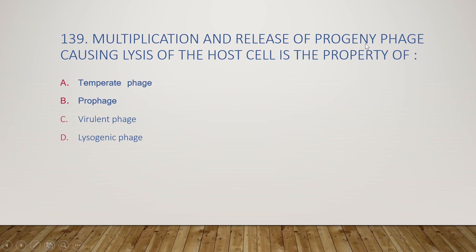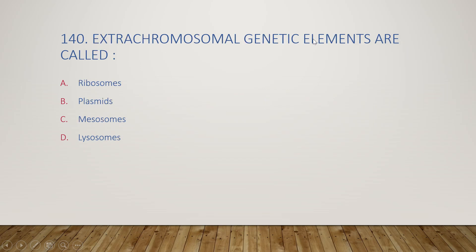The next question: multiplication and release of progeny phage causing lysis of the host cell is the property of temperate phage, prophage, virulent phage, or lysogenic phage? The right answer is option C, virulent phage. Virulent phage can cause lysis of the host cell.